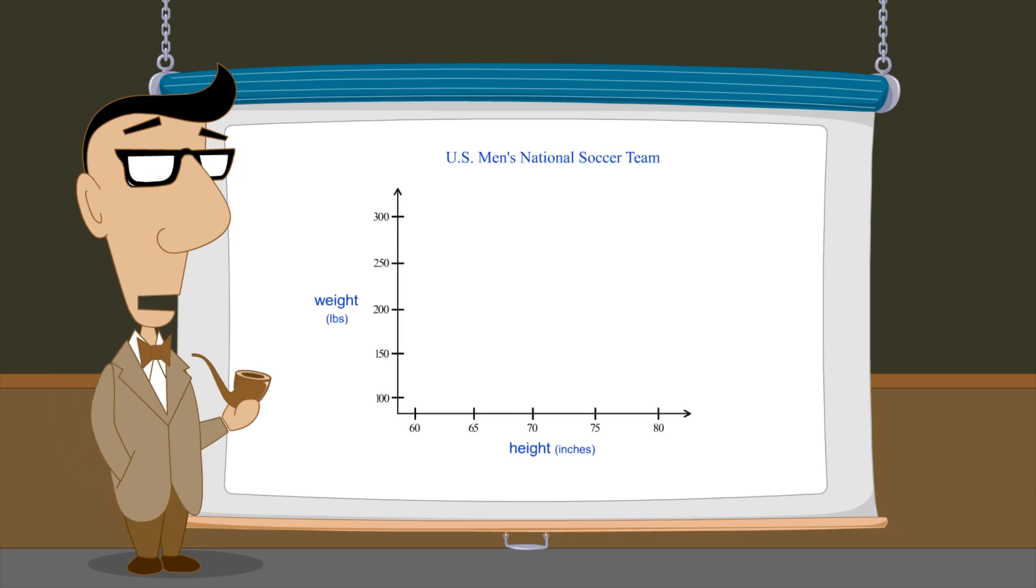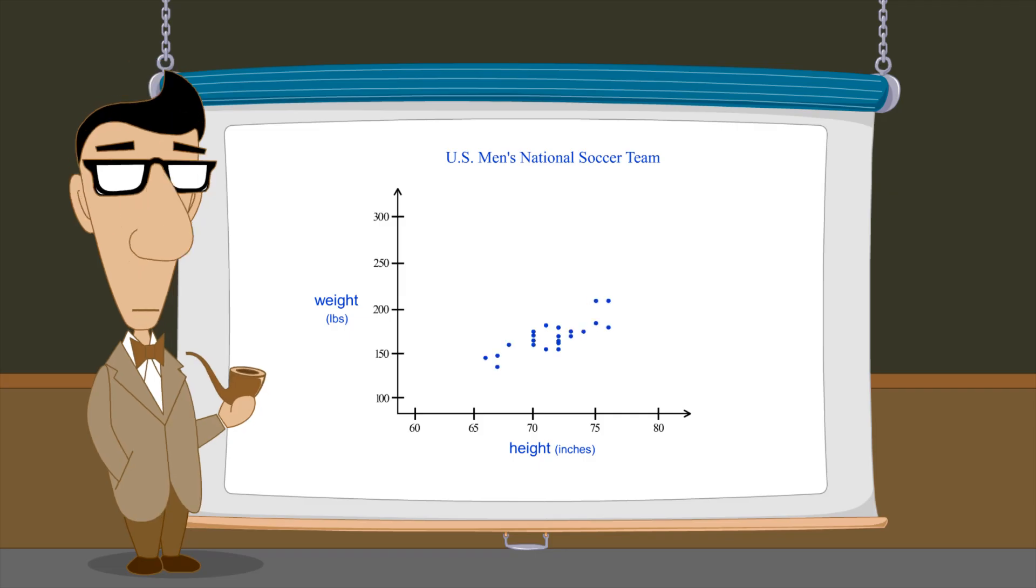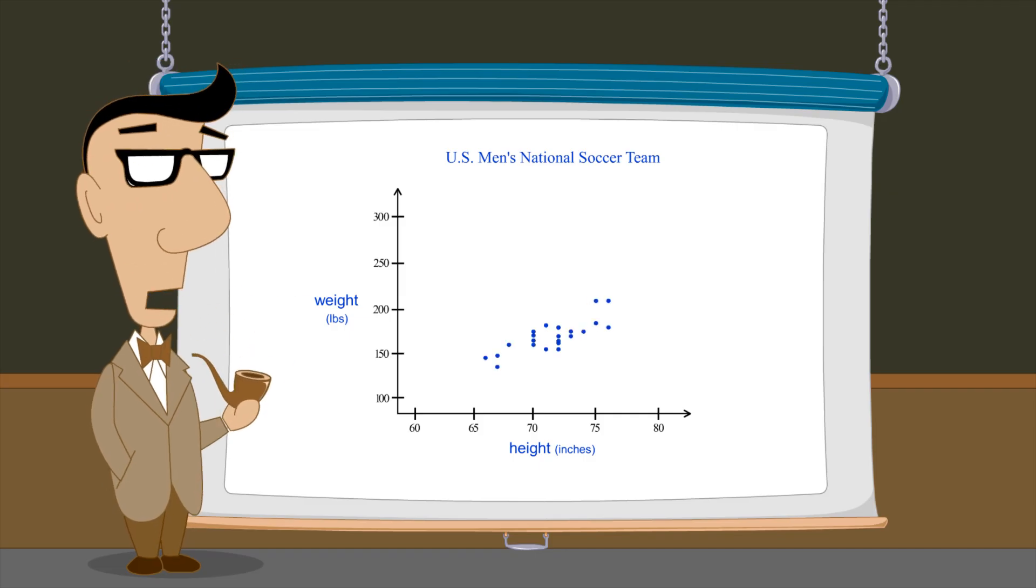Scatter plots can be useful for comparing characteristics of different groups. For instance, if we graph the weight versus height for the U.S. men's national soccer team in blue, and the weight and height for a random sample of men in red, we would see that the weights and heights of the soccer team were much more tightly grouped than the random sample.